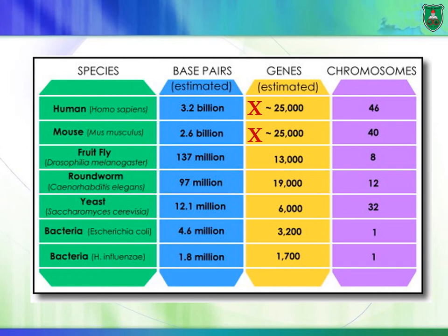It was estimated a while ago that we had about 100,000 genes when the Human Genome Project first started in 1990. But then this number continued to be reduced the more of the human genome was sequenced — it became 75,000, 50,000, 30,000, 25,000. The last estimated number of genes in the human genome is about 20,500 genes.